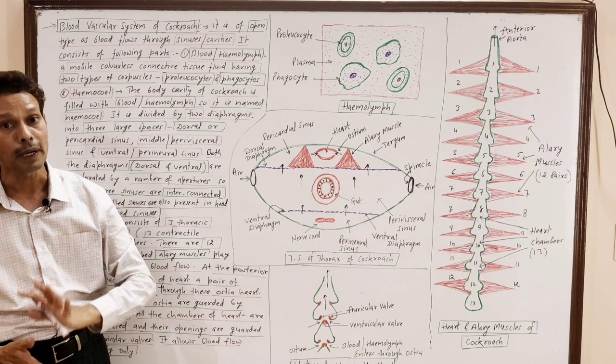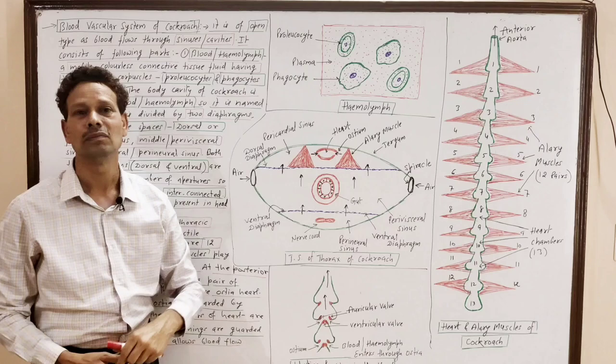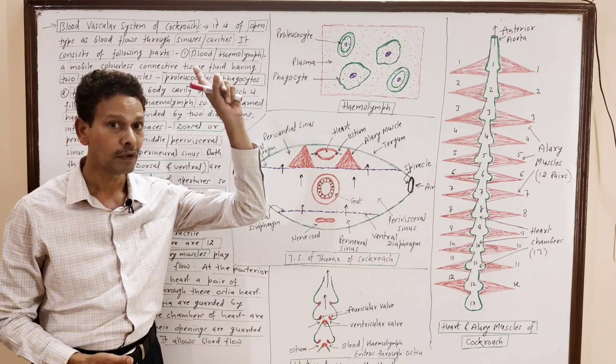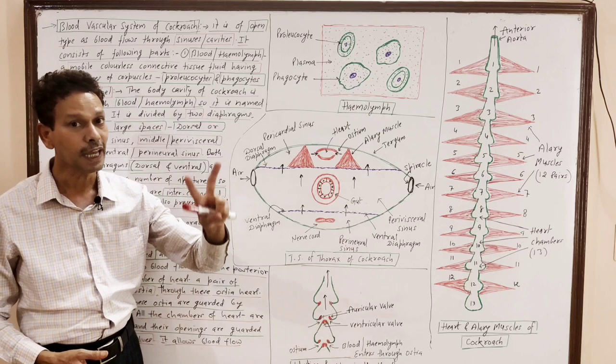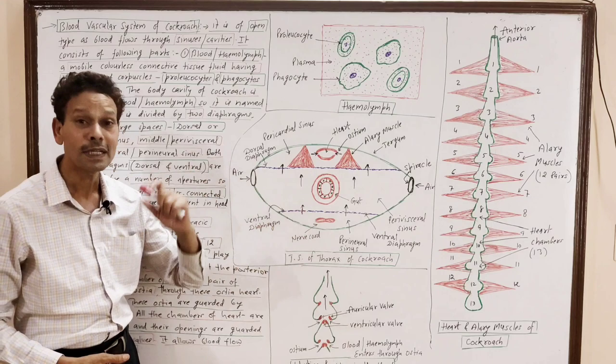The blood vascular system of cockroach is open type. It means in this animal, the blood flows through body sinuses and body cavities. But in case of earthworm, the blood vascular system is closed type — the blood remains confined in blood vessels. In cockroach, the open system means blood flows through different body cavities and sinuses.